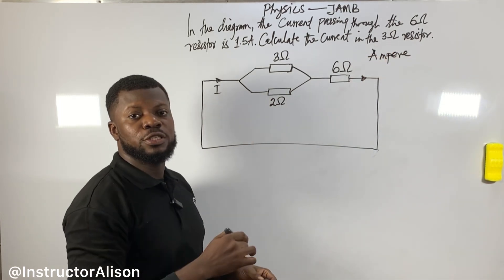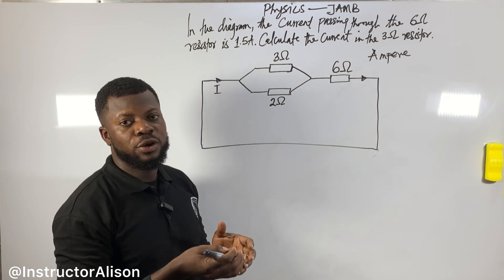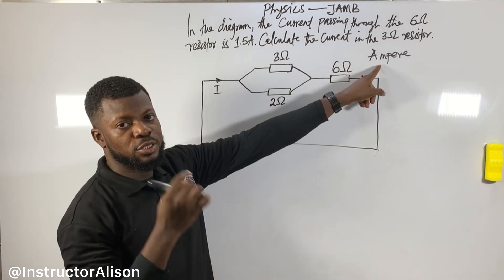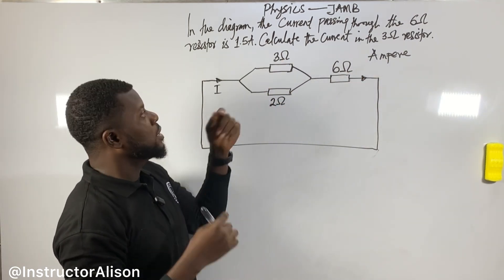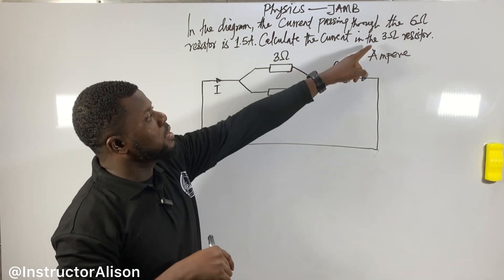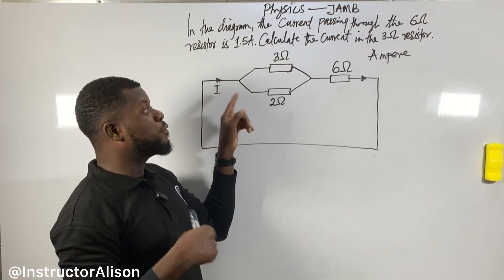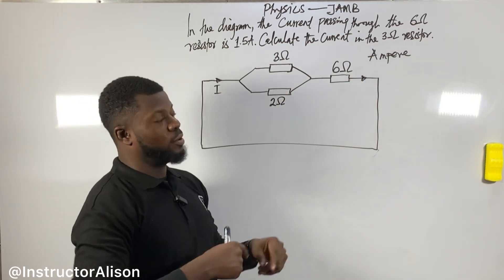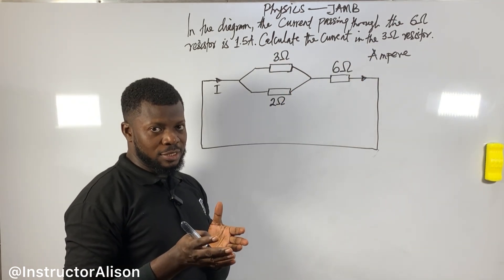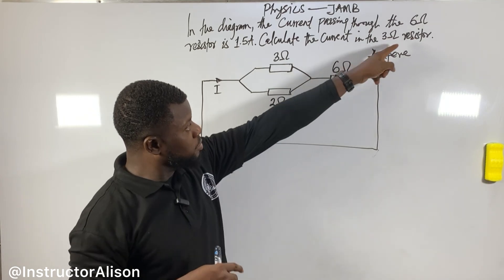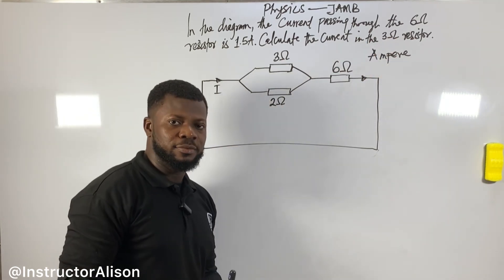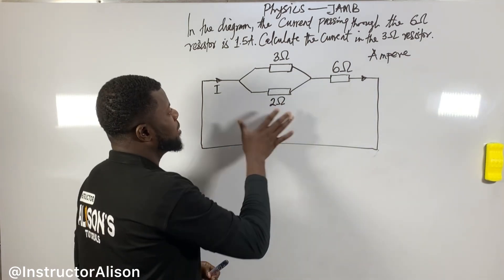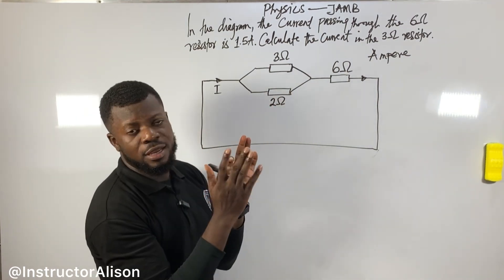The SI unit for current is measured in amperes, and we use the capital letter A as the symbol. Now we need to calculate the current in the three ohm resistor — not the six ohm one we already know about, but the three ohm resistor.